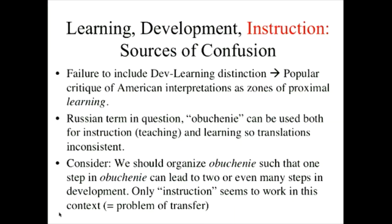I put at the bottom what I think is the key question: how can it be possible to organize the interactions between adult and child such that two steps in development are created out of one step in learning? That's really the challenge for us all to think about — how do you arrange for that kind of multiplier effect in instruction, which I think is what everybody is looking for.